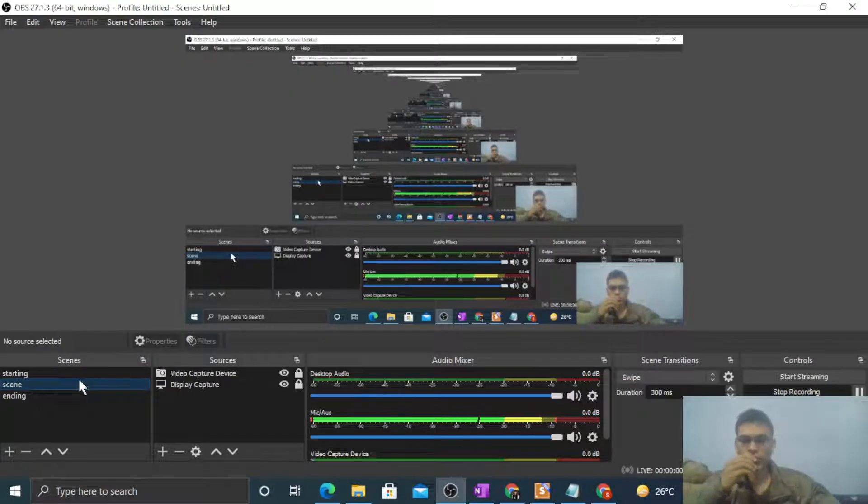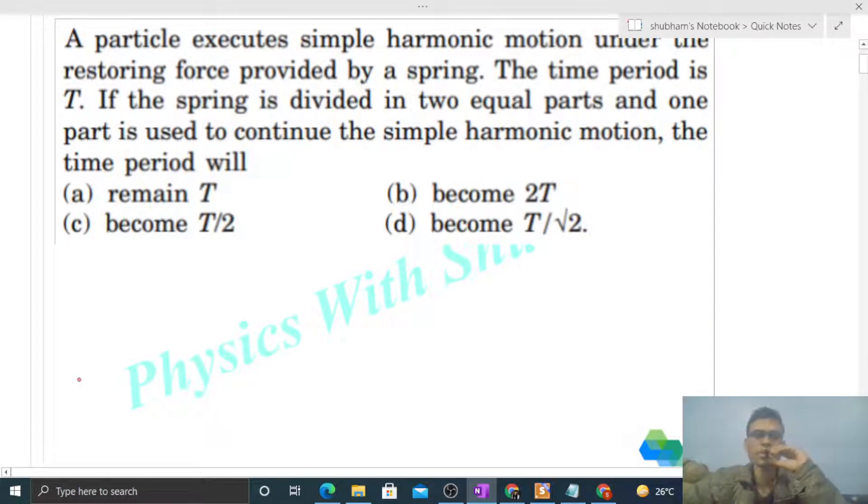Okay, hi everyone. So today let's discuss this interesting problem. It says a particle executes simple harmonic motion under the restoring force provided by a spring. The time period is capital T. If the spring is divided into two equal parts and one part is used to continue the simple harmonic motion, the time period will be?